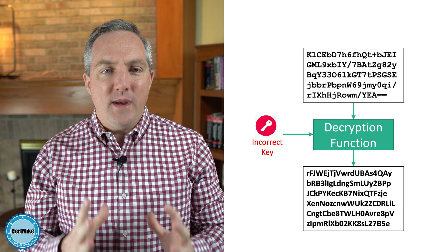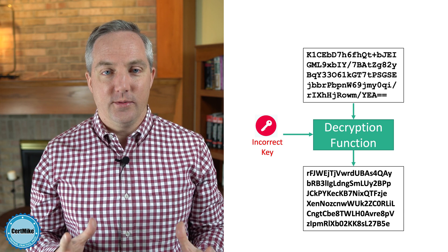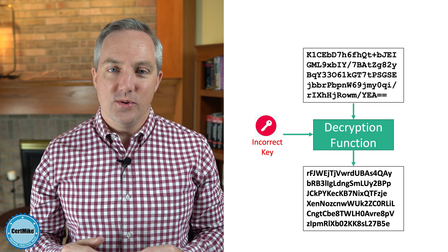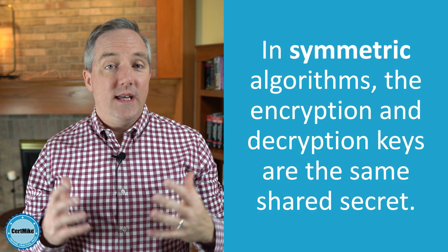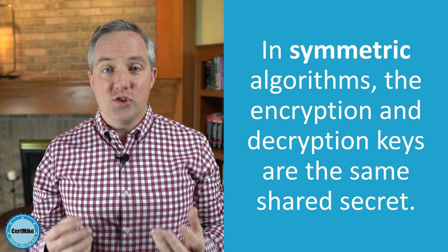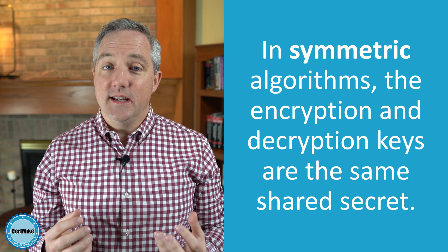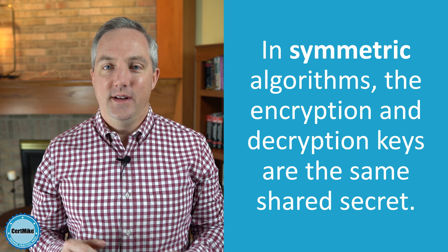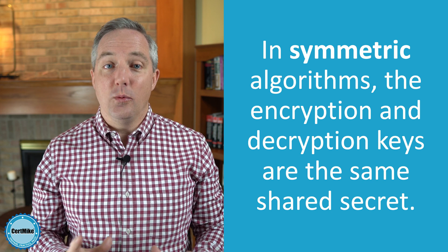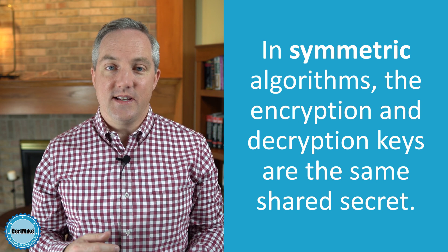There are two major categories of encryption algorithms, and the difference between them rests in the keys that are being used. In symmetric algorithms, the encryption and decryption keys are the same. If I encrypt a message with a secret key, the recipient of that message has to use the same key to decrypt it, just like a password. I need to be sure to share the symmetric encryption key with anyone that I want to read my data.